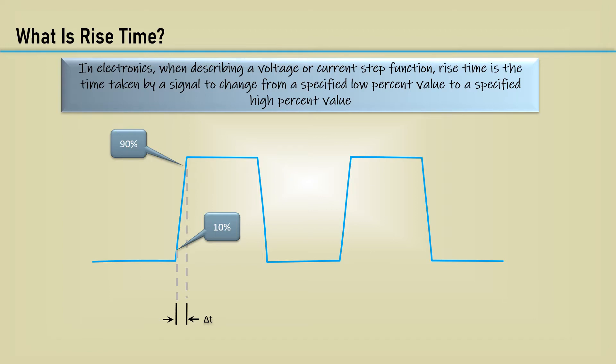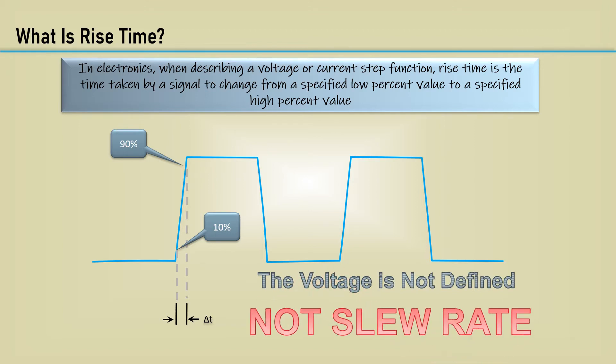Sometimes, 20% and 80% are used. The key is that it's independent of absolute voltage or current. The voltage or current is not defined, and therefore, it is not slew rate.